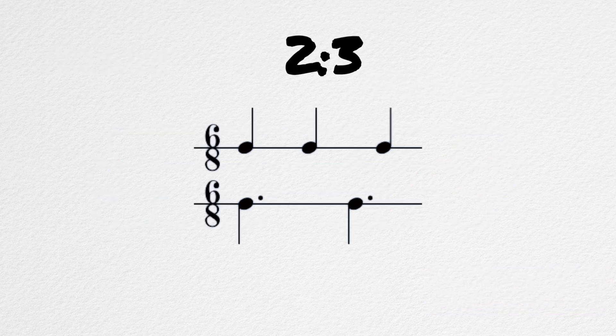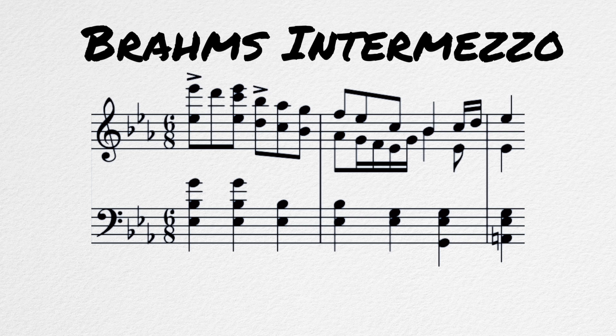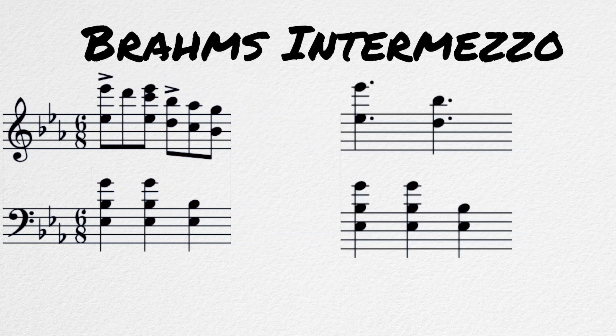The two against three is the most common and simplest polyrhythm you will find. This is sometimes also referred to as a hemiola. The music of Brahms uses the hemiola extensively. In this example, we can see that the left hand is in quarter notes, but the right hand above it is in eighth note triplets. I added some accents to make it more clear, and if we distill that first measure down to just beats, the three over two polyrhythm becomes very clear.